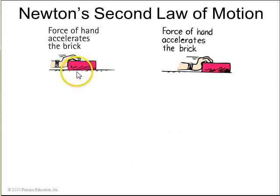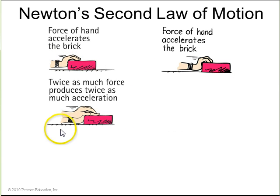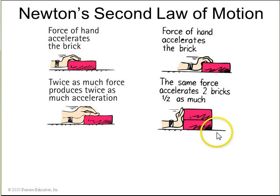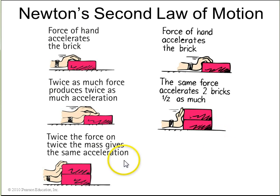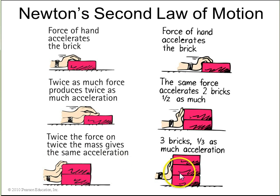Some more examples. If you have this brick, you have a force on it which is accelerating it, it gets faster and faster. If you use two hands and press twice as much force on the same brick, it'll have twice as much acceleration. Back to the original force, if you push that force on two bricks, they'll accelerate half as much. But if you put two hands on two bricks, they'll go back to the same acceleration. For the original force on three bricks, one-third as much acceleration.